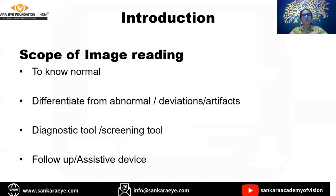Let's see what is the scope of image reading. Topography basically helps us to know what is a normal cornea, helps us differentiate an abnormal pathological cornea, and to differentiate a deviation from an artifact. Topography is a diagnostic tool for picking up ectatic corneal diseases like keratoconus, PMD, and it has been a holy grail as a screening tool for patients planned for refractive surgeries - to find out who are not fit. Topography is also used as a follow-up tool in progressive keratoconus in deciding when to do C3R and to follow up for stability. As an assistive tool, it is used for selective suture removals post-keratoplasty, planning toric incisions, and limbal relaxing incisions.